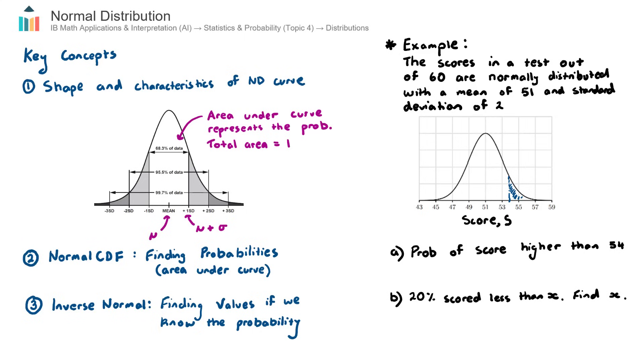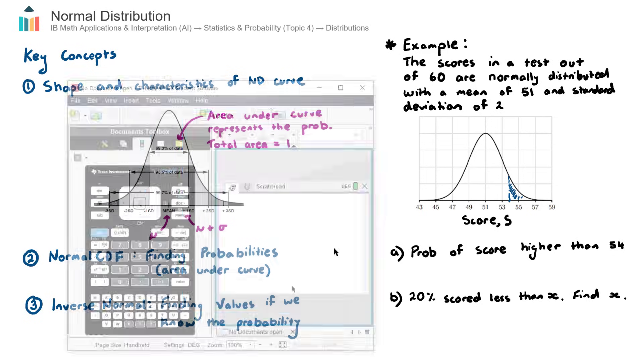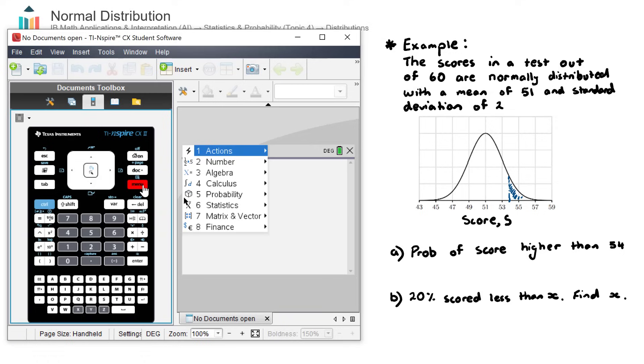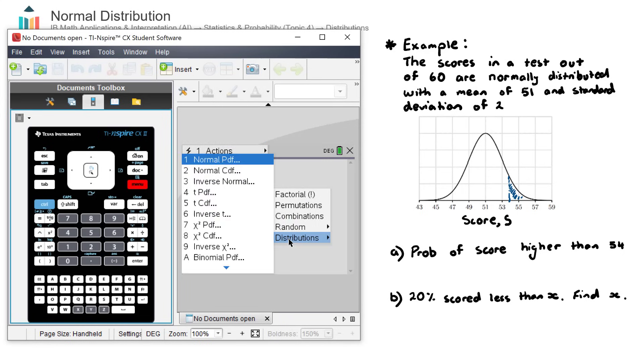Now to find the area of a shaded region, because that gives us our probability, we use the normal CDF command on our calculator. Let's go ahead and do that. So we bring the calculator up. We go menu, number five, probability, number five, distributions.